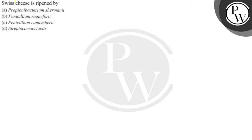Let's see the question. The question is: Swiss cheese is ripened with — Option A is Propionibacterium shalmini, Option B is Penithelium rockcordide, Option C is Penithelium camembertide, and Option D is Sceptococcus lactis.